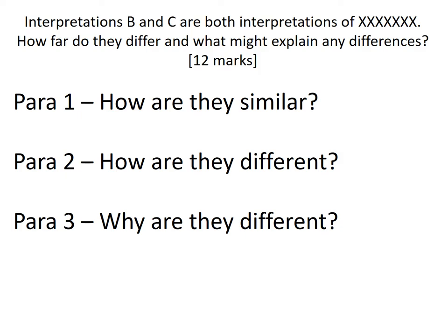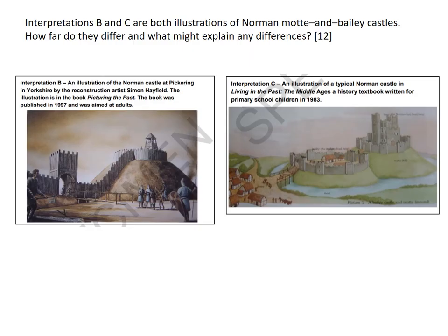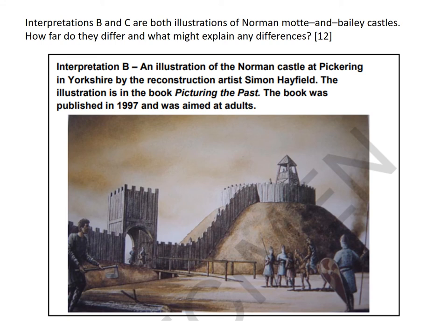Let's look at an example to understand that a bit more clearly. This example was on the sample paper for the Normans unit. It says: 'Interpretations B and C are both illustrations of Norman motte-and-bailey castles. How far do they differ and what might explain any differences?' Interpretation B is an illustration of the Norman castle at Pickering in Yorkshire by reconstruction artist Simon Hayfield, published in the book Picturing the Past in 1997, aimed at adults. In this picture you can see a dark, gloomy scene with the motte-and-bailey castle clearly visible, a tower on top of the motte, and some Norman soldiers at the bottom.